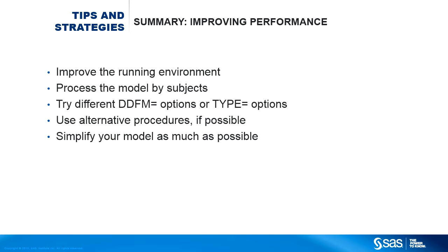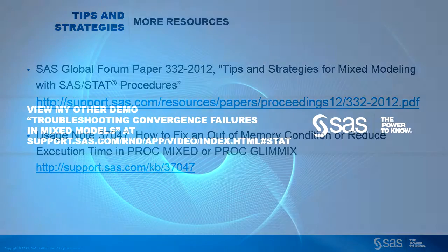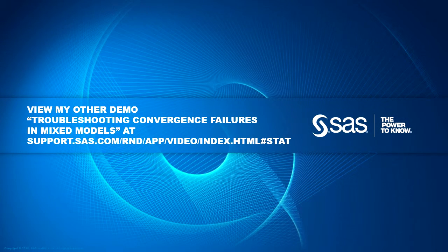Here is a summary of tips and strategies you can use to improve the speed and memory requirements for PROC MIXED: improve the running environment such as turning off ODS graphics, turning off the results window, running in batch mode, and setting the appropriate MEMSIZE values. Use the SUBJECT= option whenever possible so the model can be processed by subjects. Try different DDFM= and TYPE= options. Use alternative procedures. And always try simplifying your model when appropriate. For more information, please refer to the resources listed, and check out the companion demo on troubleshooting convergence failures in mixed models.